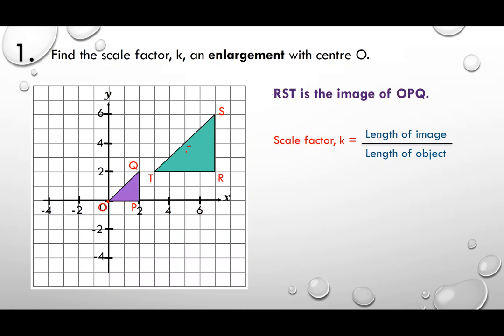RST is the image of OPQ, so OPQ is our object. To find the scale factor, I choose the image length — 1, 2, 3, 4 — so this is 4. Divided by the length of the corresponding original line: you choose the corresponding line for TR, which is OP. The original is 2. So 4 divided by 2 equals 2. This is the scale factor. Usually I choose the straight line, not the inclined line.